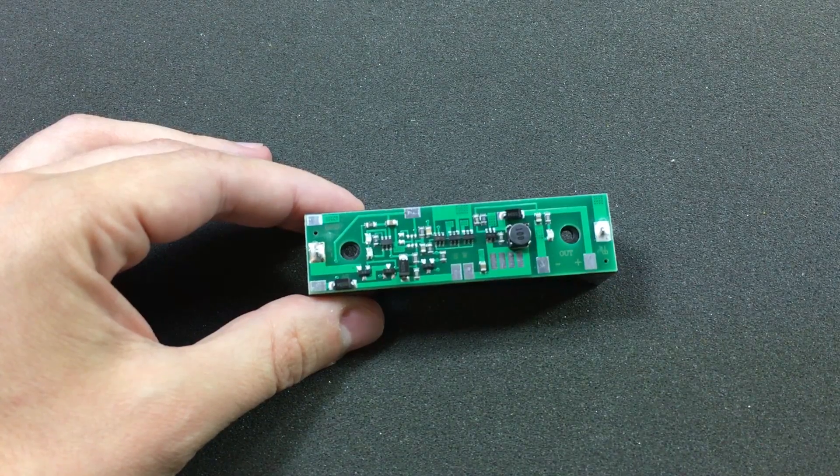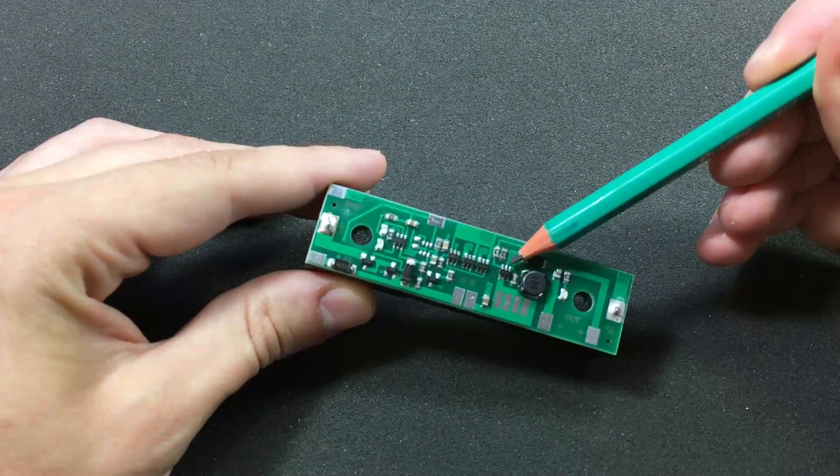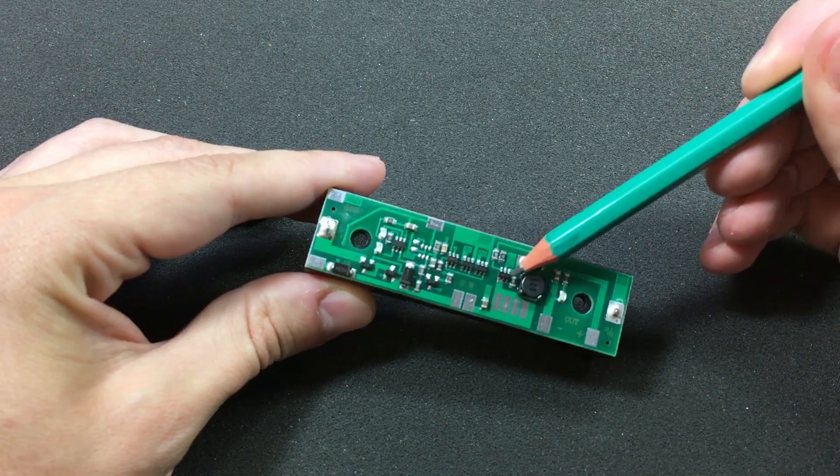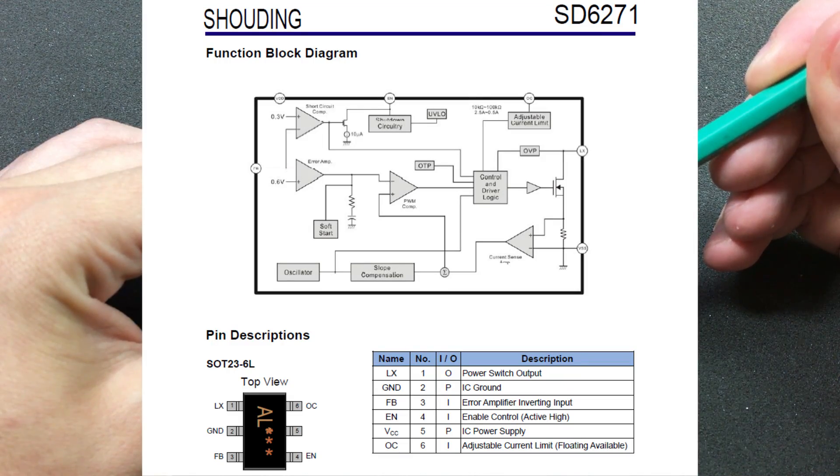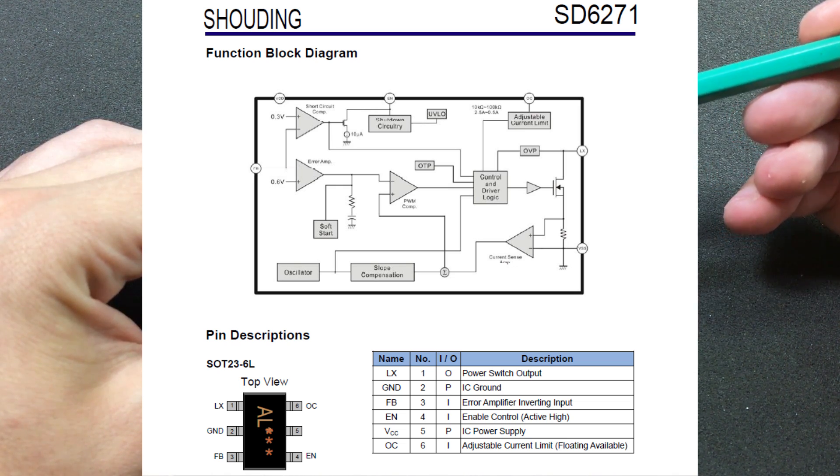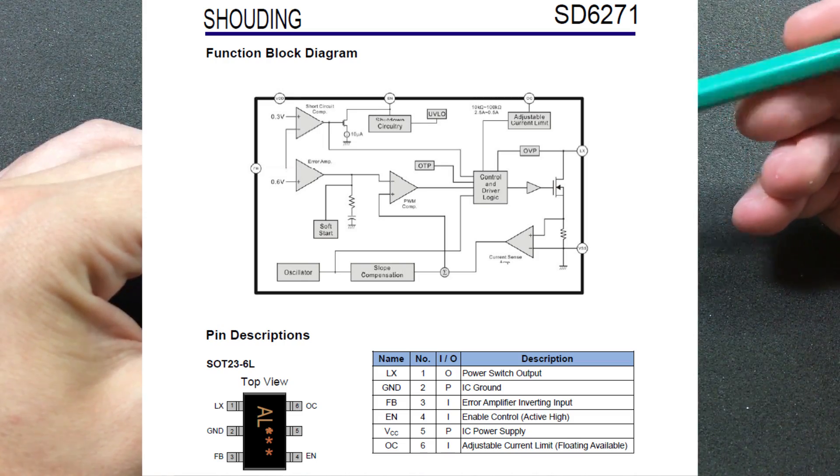The DC-DC converter is this small chip right here, marked AL692. After a bit of searching, I think the part number is actually SD6271, which is a 2A 1MHz DC-DC boost converter. The maximum input voltage is 5.5V and the output in this case is set to 12V through these two resistors.